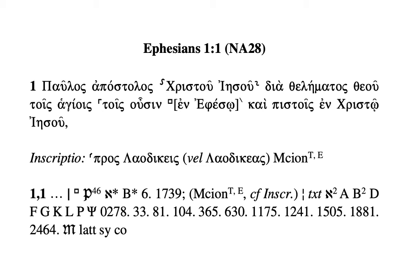Be careful with the last three here. 'Latt' means something specific — not just Latin. Page 69 of the introduction tells you that 'latt' means the entire Latin tradition, covering various categories like the Vulgate, Old Latin, and so on. Similarly, 'sy' means the entire Syriac tradition — you can see that on page 70. And 'co' means all the Coptic witnesses, not just certain dialects of Coptic, which you can see on page 74 of the introduction.